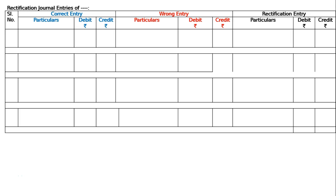The question is: rectify the following errors. Error one — sale of old furniture worth three thousand treated as a sale of goods. The correct entry is cash account debited to furniture account three thousand. The wrong entry was cash account debited to sales account three thousand, treating it as a sale of ordinary goods.